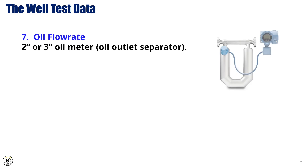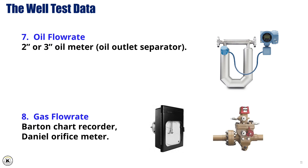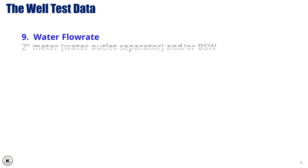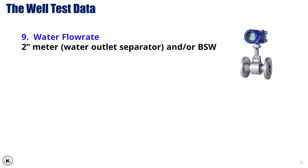7. Oil Flow Rate — measured using a 2-inch or 3-inch oil meter at the oil outlet from the separator to determine the volume of oil being produced. 8. Gas Flow Rate — measured using a Barton chart recorder with a Daniel orifice meter, which calculates the gas flow rate based on a pressure drop across the orifice in the gas flow path. 9. Water Flow Rate — measured using a 2-inch meter at the water outlet from the separator; it can also be calculated using the BSW.